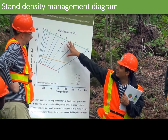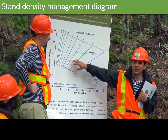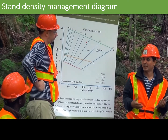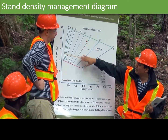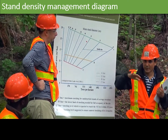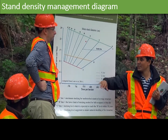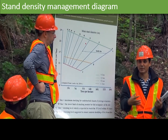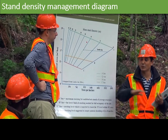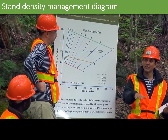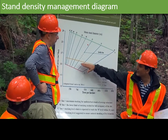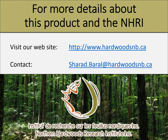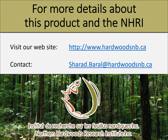The idea behind thinning to the B line is that we remove trees from our stand so that we leave just the number of trees that fully occupy the space without competing with each other. We want to reduce competition but maintain full occupancy of the site. For more details about this product and the NHRI, visit our website or contact us.